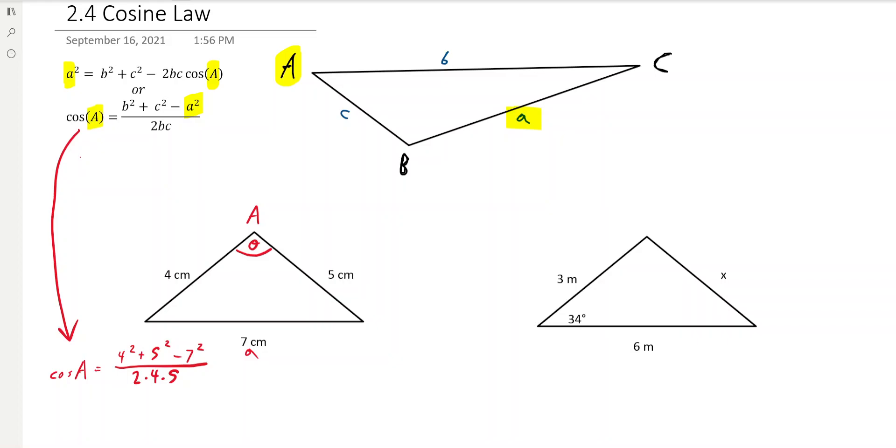Now we're looking for the angle A, though, not just cos A. So what you do is you go cos⁻¹ of that. I'm just going to rewrite that out, so it's nice and clear. These cancel here. So A = cos⁻¹(4² + 5² - 7²)/(2 × 4 × 5).